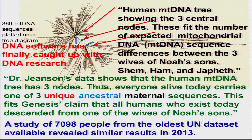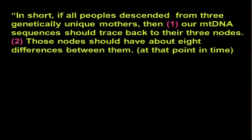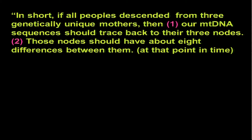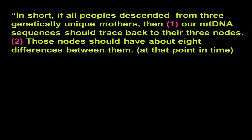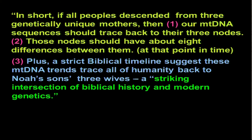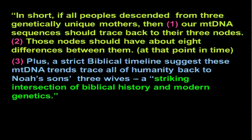A study of 7,098 people from the oldest United Nations data set available revealed similar results in 2013 — they just weren't able to display it yet. In short, if all peoples descended from three genetically unique mothers, then our mitochondrial DNA sequences should trace back to one of their three nodes; those nodes should have about eight differences between them; and a strict biblical timeline suggests these mitochondrial DNA trends trace all of humanity back to Noah's sons' three wives — a striking intersection of biblical history and modern genetics.